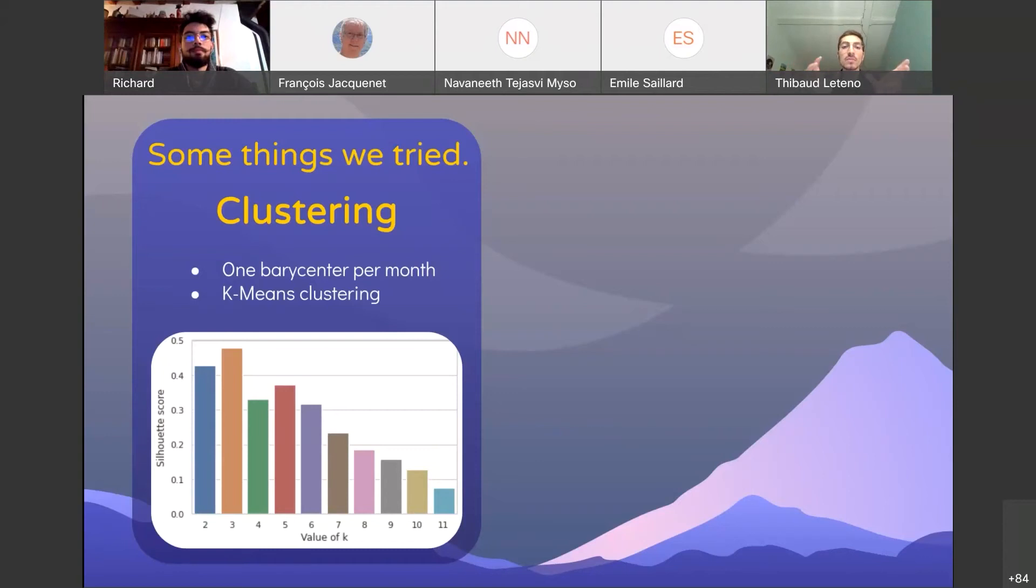We first created one barycenter per month, which basically means we create an average sample for each month. And then we apply a clustering method called K-means, where K is the number of expected clusters. And we use the Silhouette score to evaluate the quality of clustering. The Silhouette score is a common metric for this task. And we observed that the best K value is three.